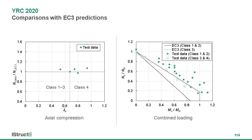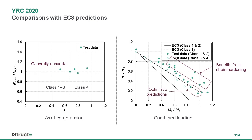Finally, a quick comparison with Eurocode 3 predictions. For axial compression, Eurocode 3 gives generally accurate predictions for the tested specimens. However, for the case of combined loading, the benefits from strain hardening are not captured by Eurocode 3. At the corners of the bilinear interaction curves, some test points fell on the unsafe side, and this is something we can work on in the future to improve.